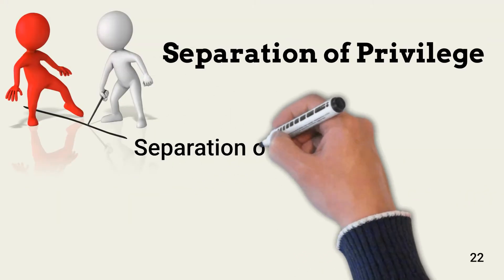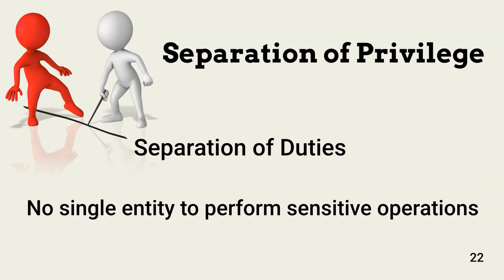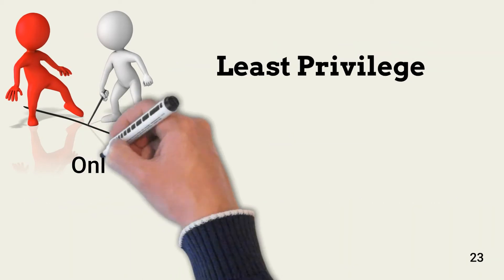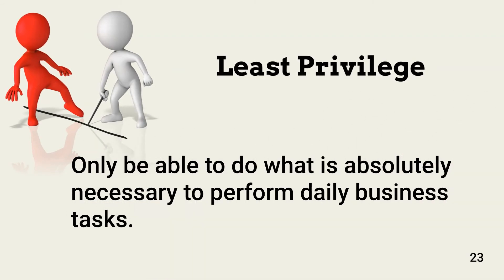Commonly known as separation or segregation of duties, separation of privilege requires at least two actors or components to perform a security-sensitive operation. This helps prevent fraud and mistakes. Separation also applies to managing change to systems, controls, and infrastructure. Least privilege is a common access control that ensures a human or non-human actor can only perform those actions on an information resource that are absolutely needed to perform daily business tasks.